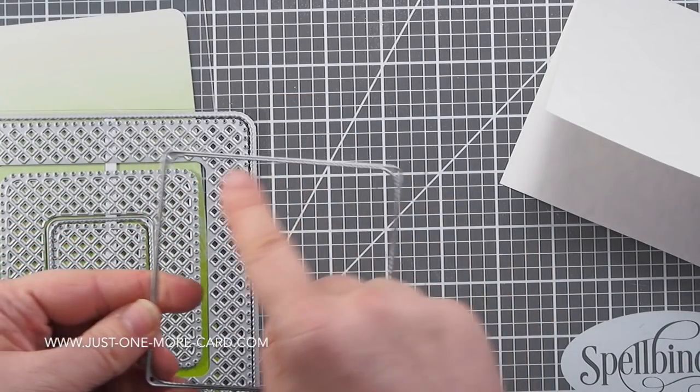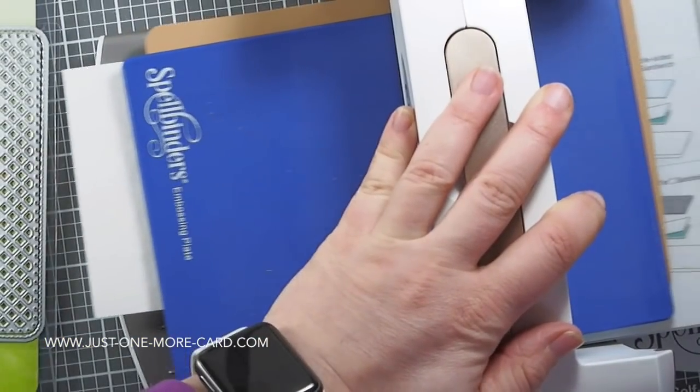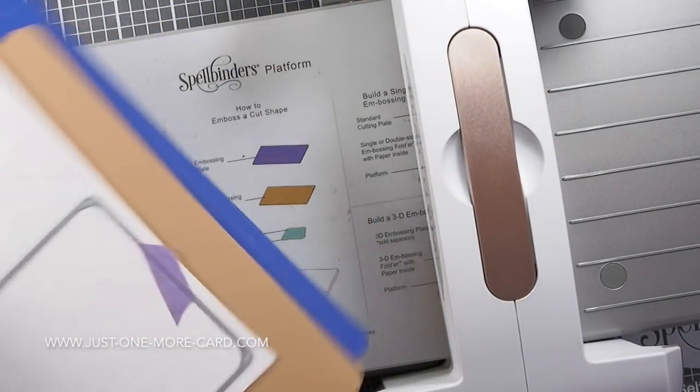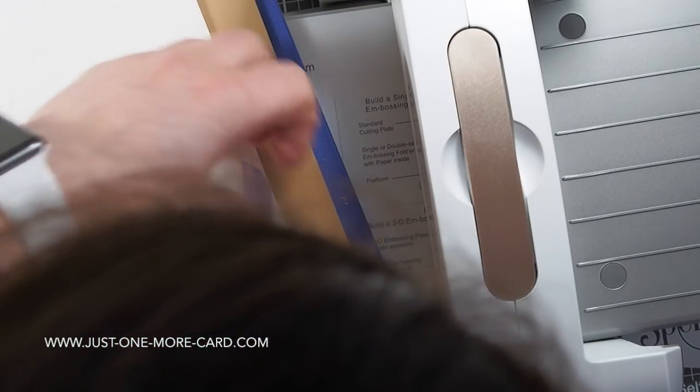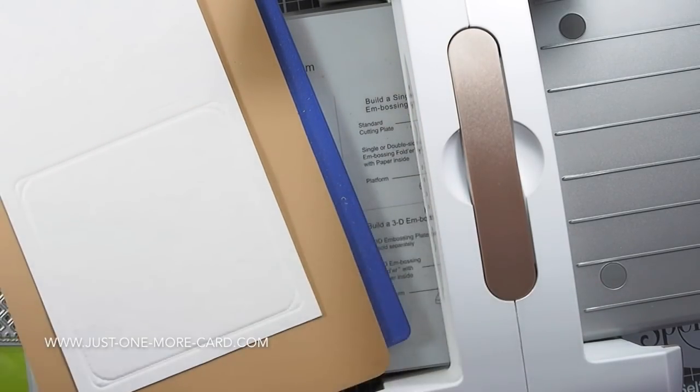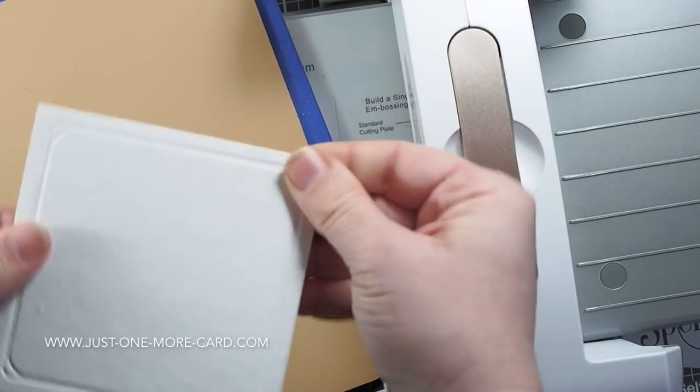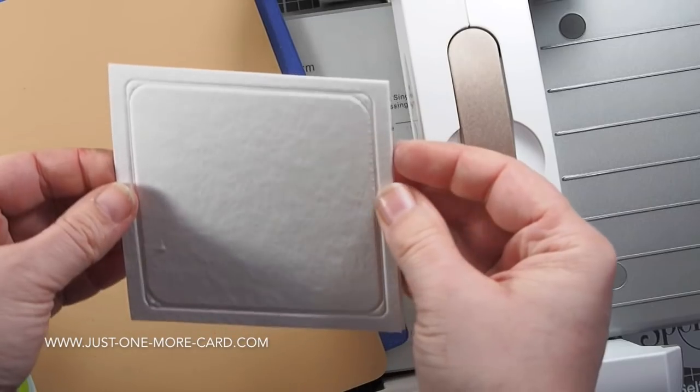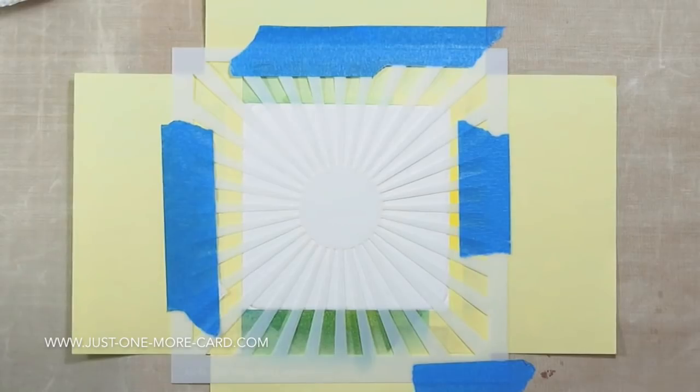I just like the square shape and I'm going to emboss it. I'm using my Spellbinders Platinum Die Cutting Machine with the embossing plate and tan embossing mat. This presses the die into the watercolor paper and because the watercolor paper is quite soft and thick, you have this really nice indentation. You're not die cutting, you're dry embossing onto the watercolor paper. You can see here I have this really nice frame and it didn't go through.